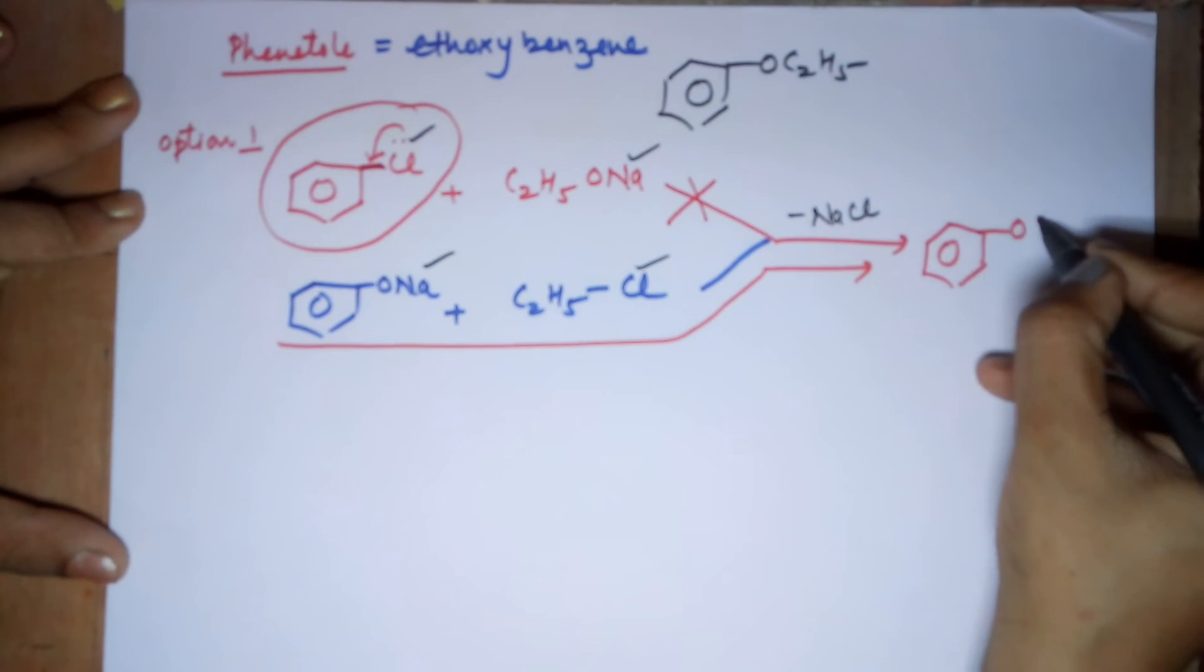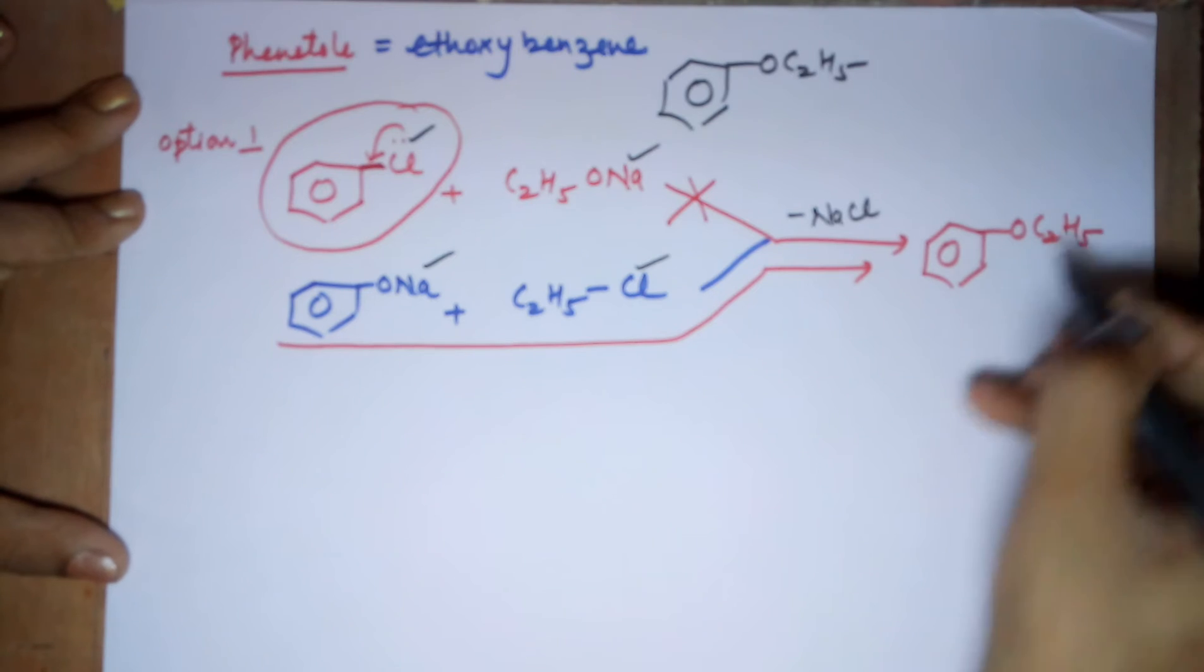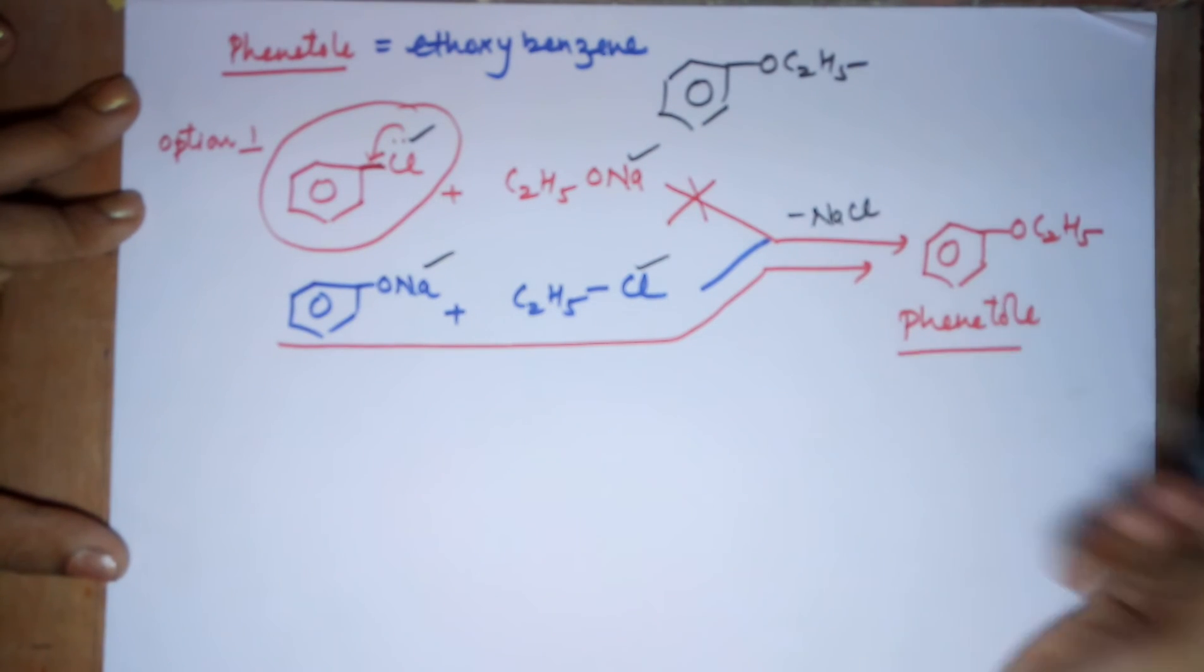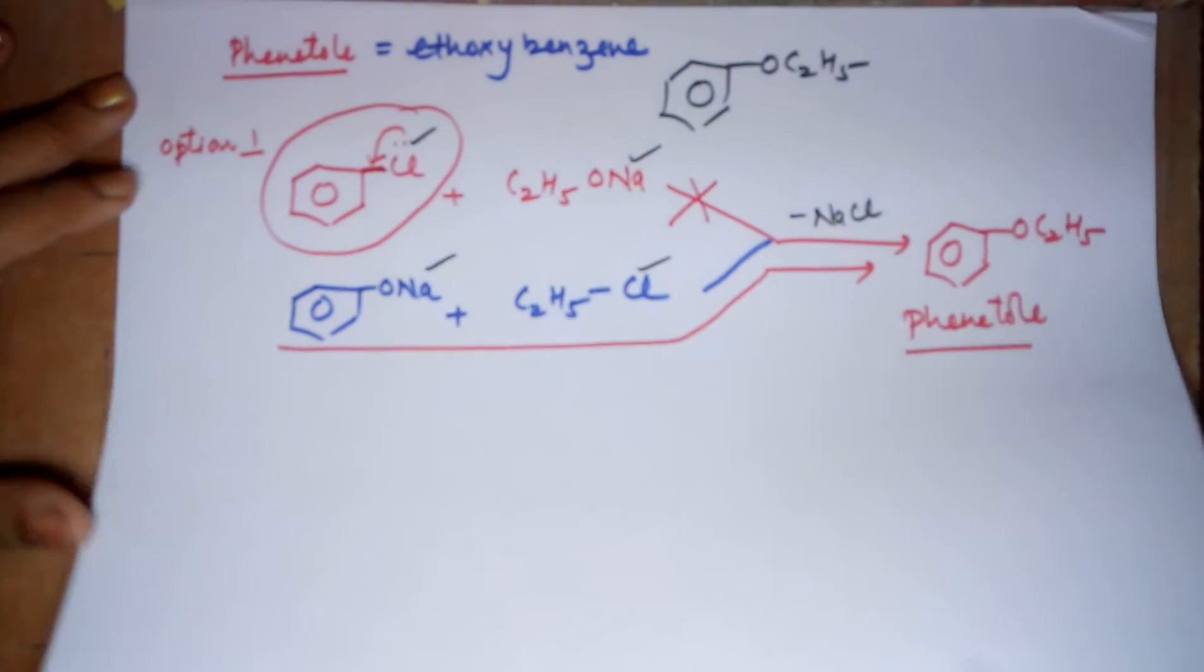So, your right route is this. Hence, your product is O-C2H5, that is phenetole. So, if you are asked to prepare phenetole by Williamson's synthesis or anisole by Williamson's synthesis, don't forget, your halide cannot be from the benzene ring. Fine, I will take one last example to clarify the Williamson's synthesis topic.